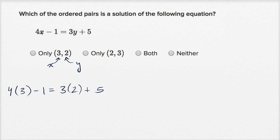Notice all I did is wherever I saw the x, I substituted it with 3. Wherever I saw the y, I substituted it with 2. Now let's see if this is true. 4 times 3 is 12 minus 1.